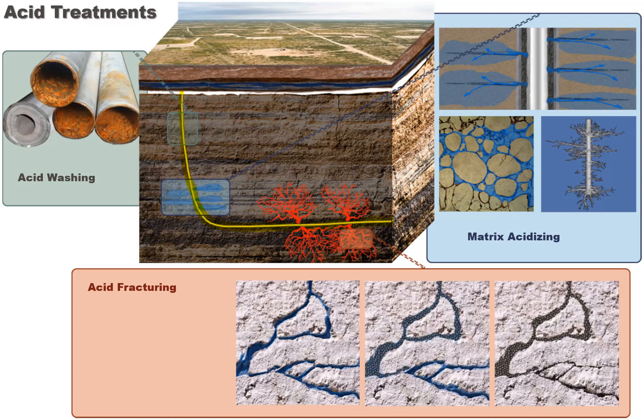In particular, I will talk about acid washing, where our goal is wellbore cleaning. I will discuss matrix acidizing, in which we are injecting acid in the reservoir at matrix pressure — simply at pressure below formation fracturing pressure. Finally, fracture acidizing is the type in which we inject acid at pressures above formation fracturing pressure.